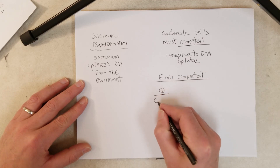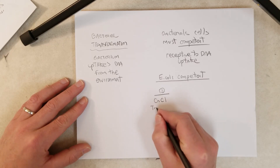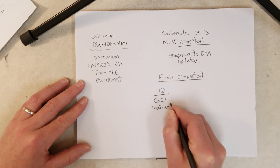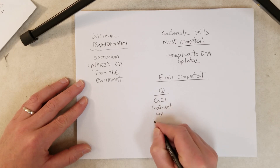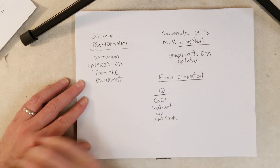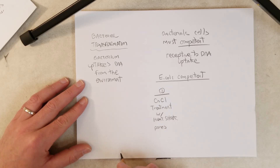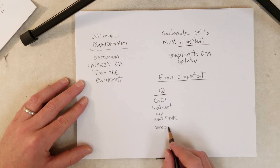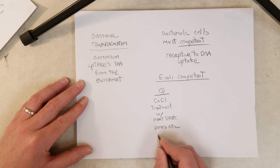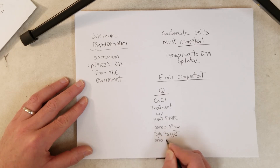One method involves treatment of E. coli with calcium chloride. Using high levels of calcium chloride combined with heat shock is thought to form pores in the cell walls and cell membranes of E. coli. A lot of the cells die, but for some, the pores don't kill the E. coli — rather, the pores allow the DNA to get into the cell.